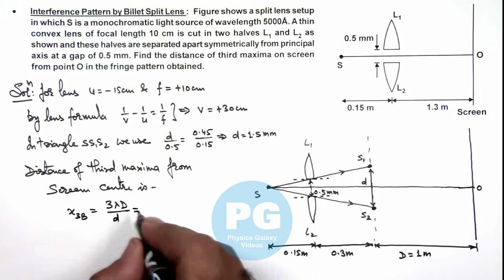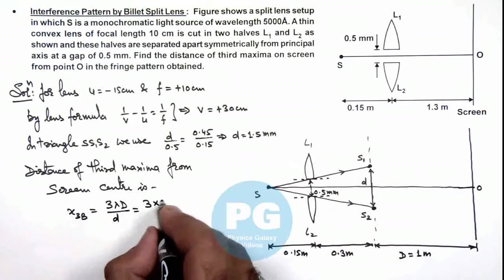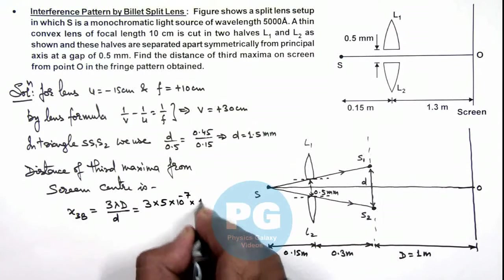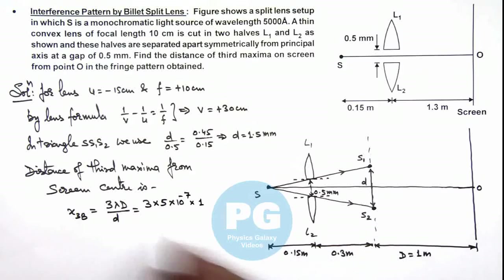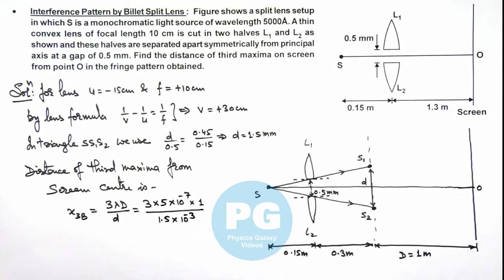So if we substitute the numerical values, this is 3 multiplied by wavelength 5000 angstrom, it is 5 × 10^-7, multiplied by capital D is 1 meter, divided by small d is 1.5 × 10^-3 meter. And here if you simplify this it gives a value of 10^-3 meter which is equal to 1 mm. And that is the result of this problem.